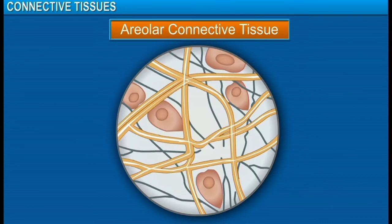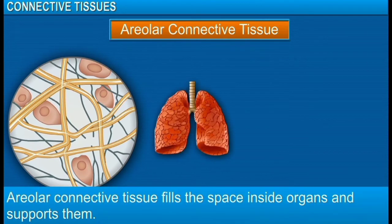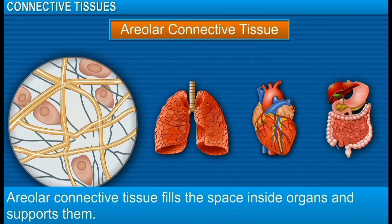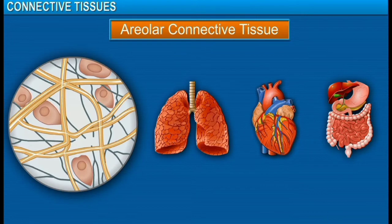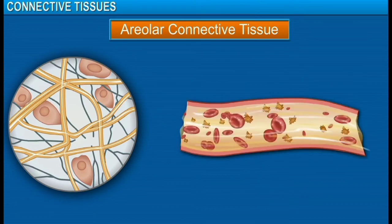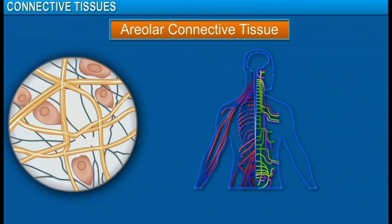These irregular shaped cells are areolar connective tissues that fill the space inside organs and support them. These tissues also help in the repairing of worn out tissues. Such tissues are found between the skin and muscles and around blood vessels and nerves.